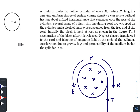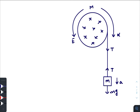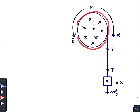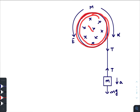Let us analyze the situation properly. Just after releasing the mass m, gravity starts acting on it and tension T comes into action. Due to this tension there will be an increase in angular velocity of the cylinder. Now since this cylinder carries charge, the rotating charge will create a conduction current, and due to that current there will be a magnetic field directed into the plane of paper.